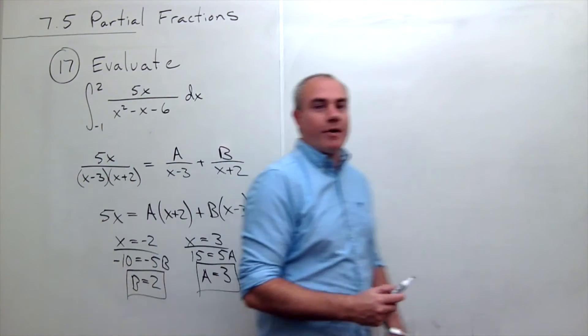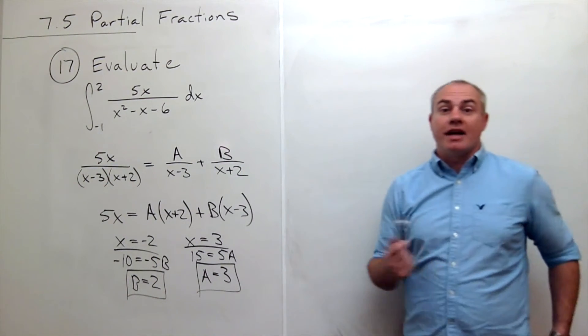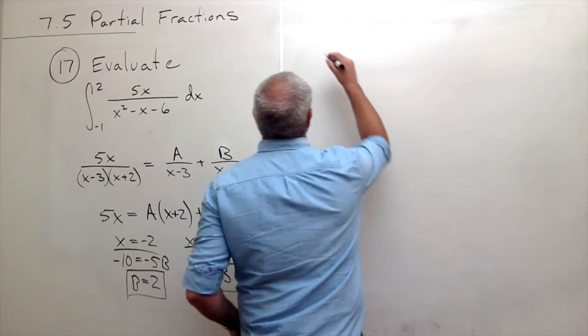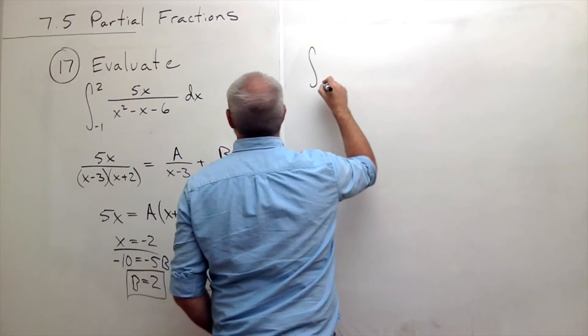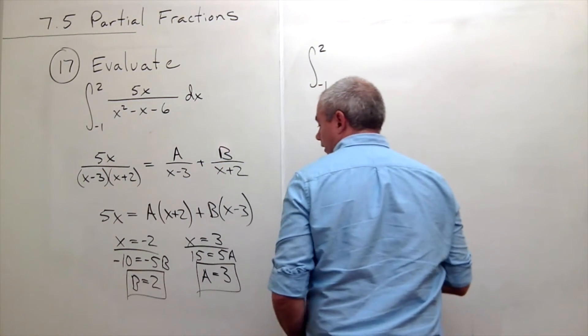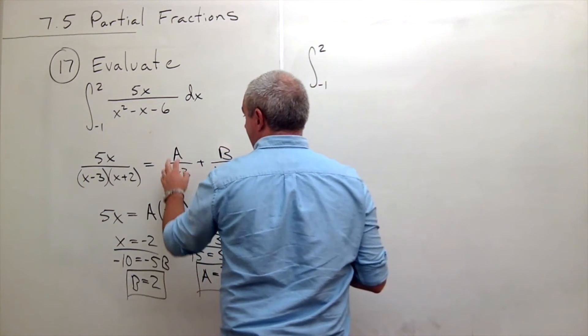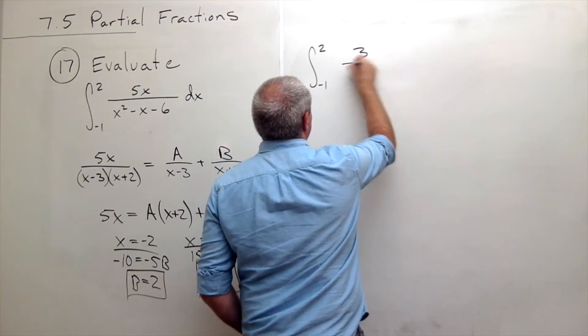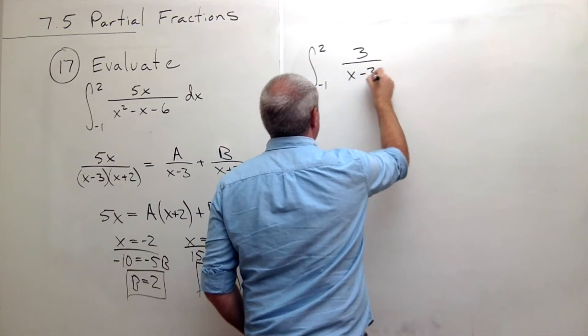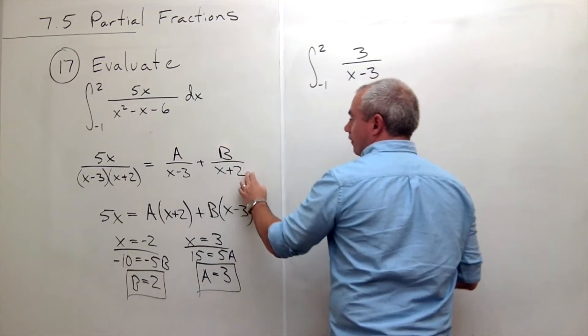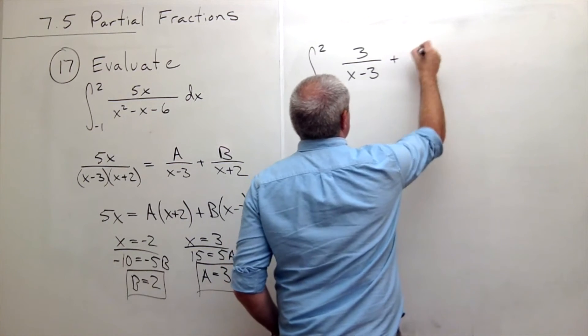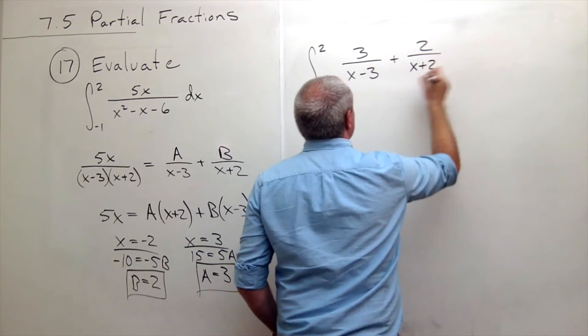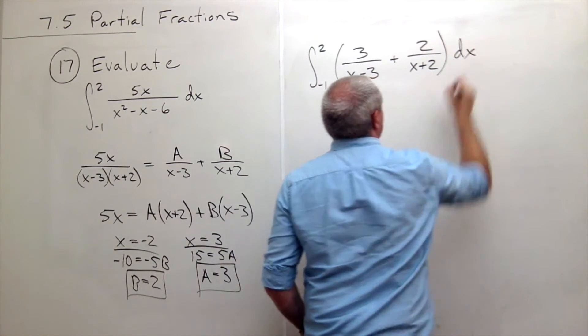Okay, so I've solved for my A and I've solved for my B. Now let's rewrite my integral. So my integral now can be written as the integral from minus 1 to 2 of A over x minus 3. Well, A is 3. So I've got 3 over x minus 3. And I've got B over x plus 2. B is 2 plus 2 over x plus 2. All of that dx.